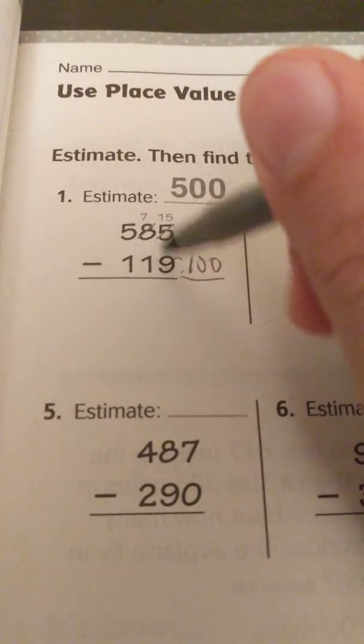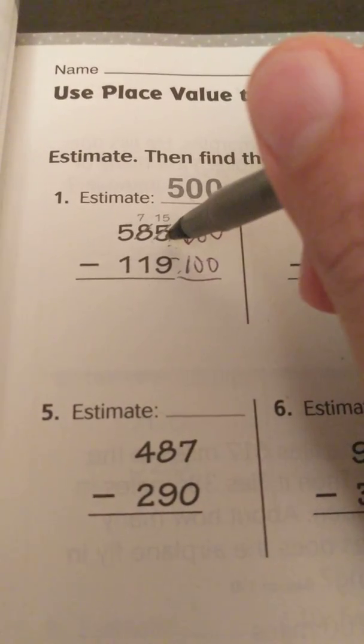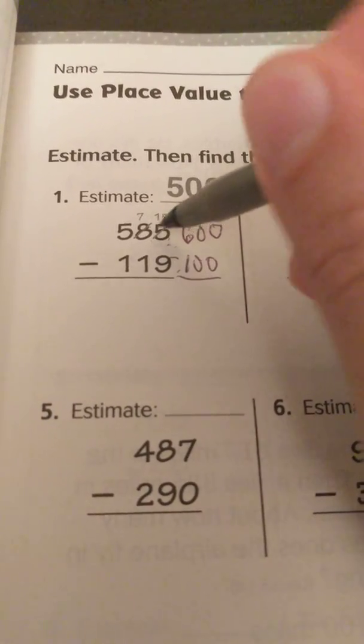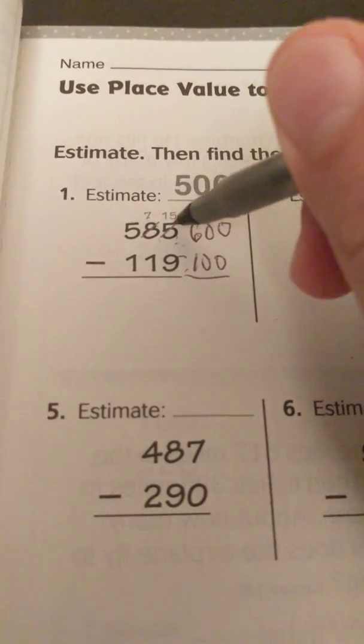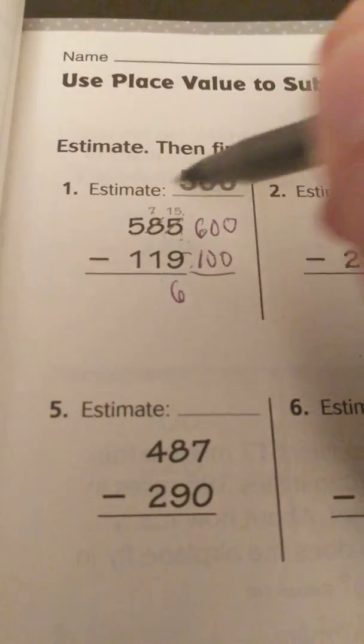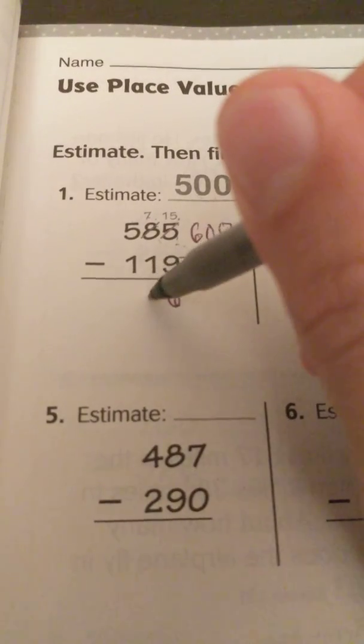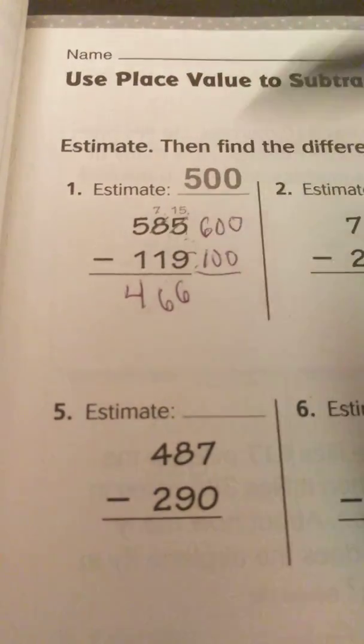From there you're just going to subtract, and you've already seen they've done some of the regrouping for you. You cannot subtract this, so they've taken a 10 from here and added 10 here. So we have 15 minus 9 is 6, 7 minus 1 is 6, 5 minus 1 is 4, 466.